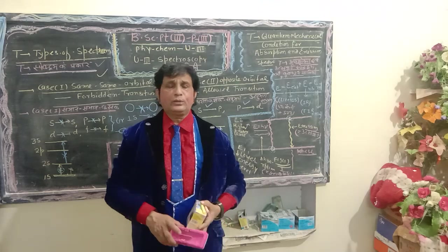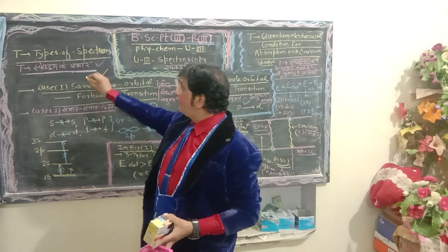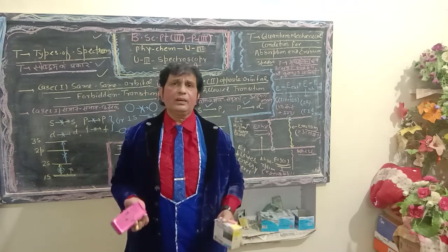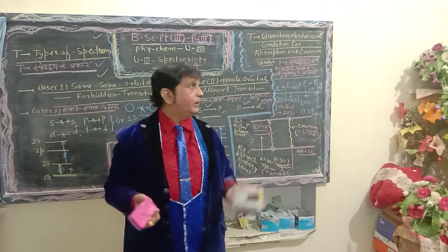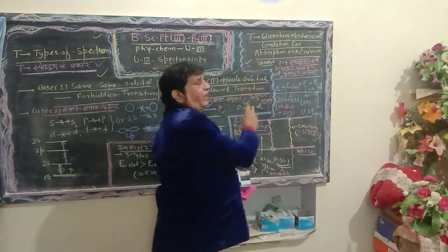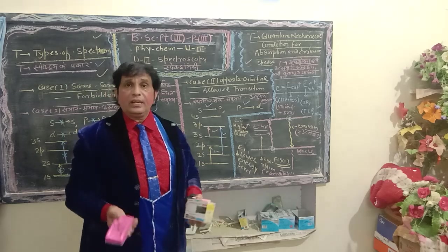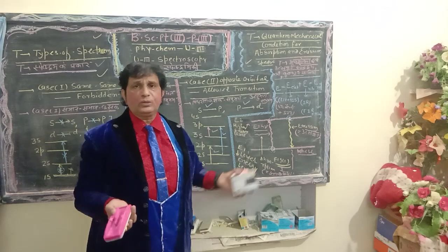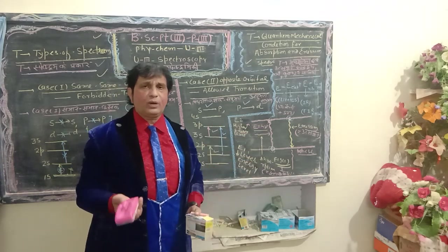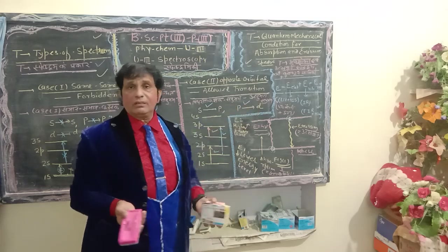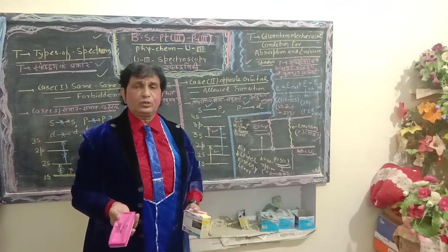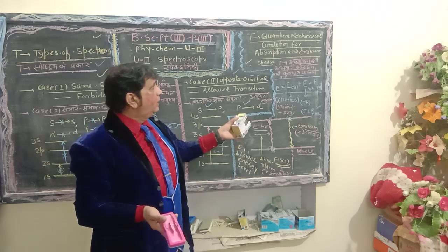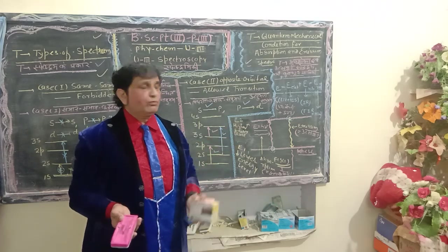There are two types of spectrum: emission spectrum and absorption spectrum. Emission spectrum is produced when extra energy or heat is provided to a substance possessing higher energy, and after absorption of that energy the resulting radiation is recorded on a photographic plate.